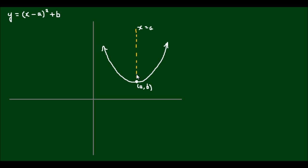Now suppose I have a point on this line of symmetry and I'm going to call this point f. The vertical distance of f I'm going to call p. And now suppose I have an imaginary horizontal line below the parabola, and its distance from the vertex is also p.